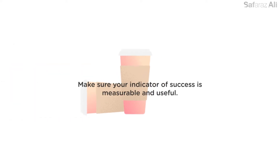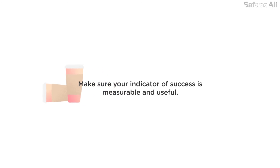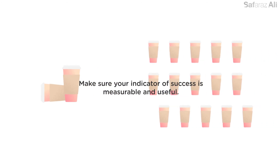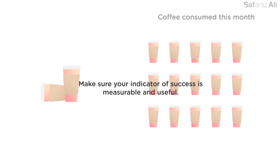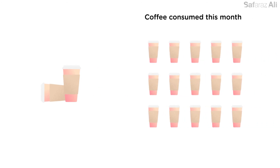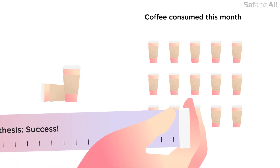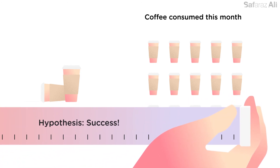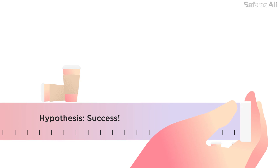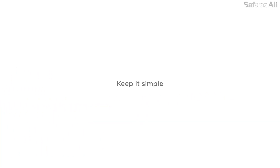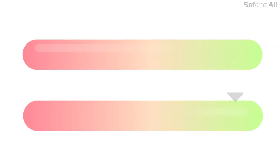Tip one: make it measurable. To choose the right KPIs, check that what you're using as an indicator of success is measurable and that it is useful. If you can't measure it, or your measurement isn't useful to your goals, it will only indicate failure even if you are performing well.